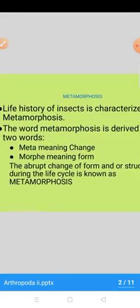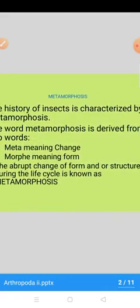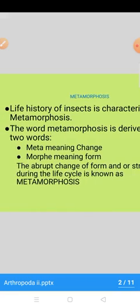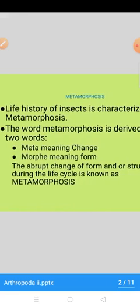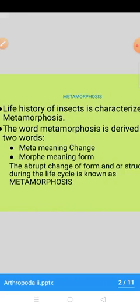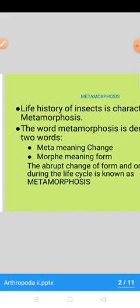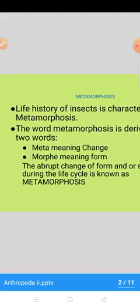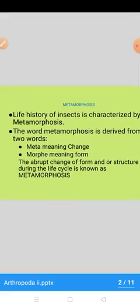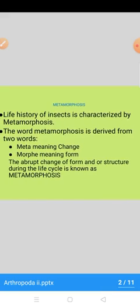Life history of the insects is characterized by metamorphosis. The word metamorphosis is derived from two words: meta meaning change, morph meaning form. The abrupt change of form or structure during the life cycle of an arthropod is known as metamorphosis.